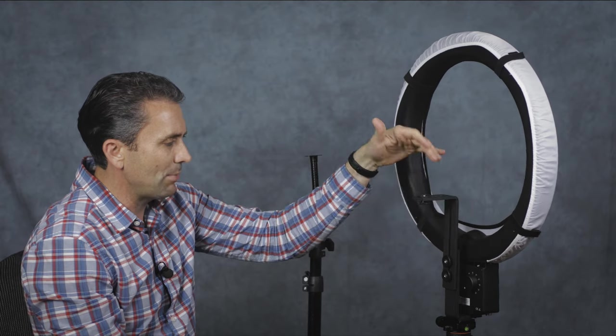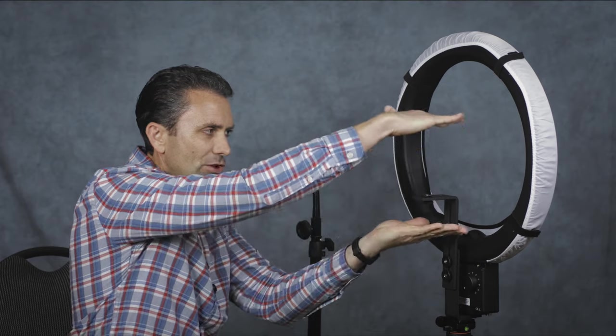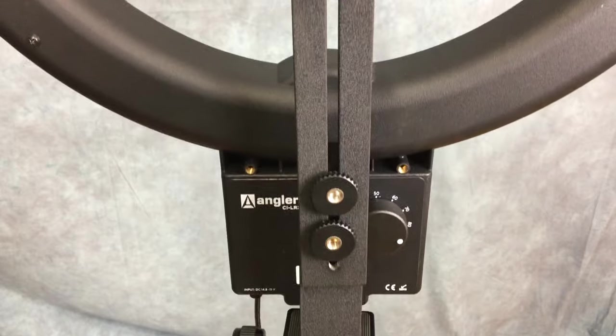There also is, of course, you can adjust this up or down and you can mount an assembly on here where you can actually attach your camera right to this, as opposed to another tripod, if you want to shoot through the ring light.